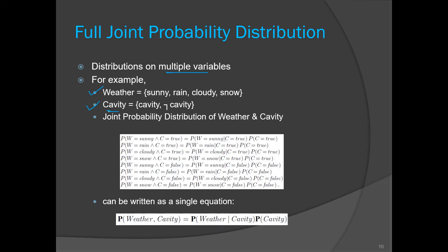Cavity is related to the toothache patient example — he may have cavity or no cavity. Weather has four values and cavity has two values. We use capital letters to indicate variables and small letters for constants. Now, the total number of possible combinations of these two variables is four times two, which gives us eight combinations.